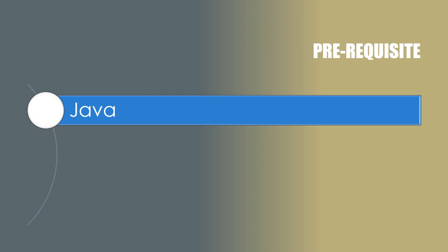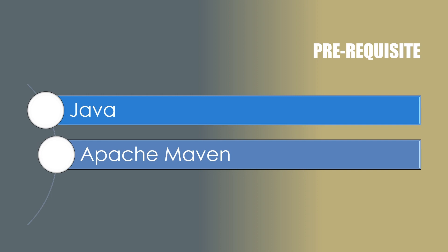Besides Java, you need a brief knowledge of Apache Maven. We already have a video on Apache Maven. We need it because when using Hibernate, we don't get all the required libraries by default from Java — we need Hibernate jar files. Rather than adding them manually, we will use Apache Maven with a Maven-based project and provide dependencies in our pom.xml. Just watching one or two videos from our Maven series will be more than sufficient.